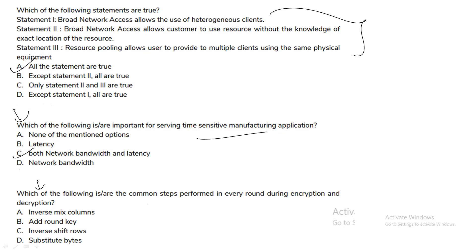Which of the following are the common steps performed in every round during encryption and decryption? Both Add Round Key and Substitute Bytes are the common steps performed in every round of encryption and decryption.